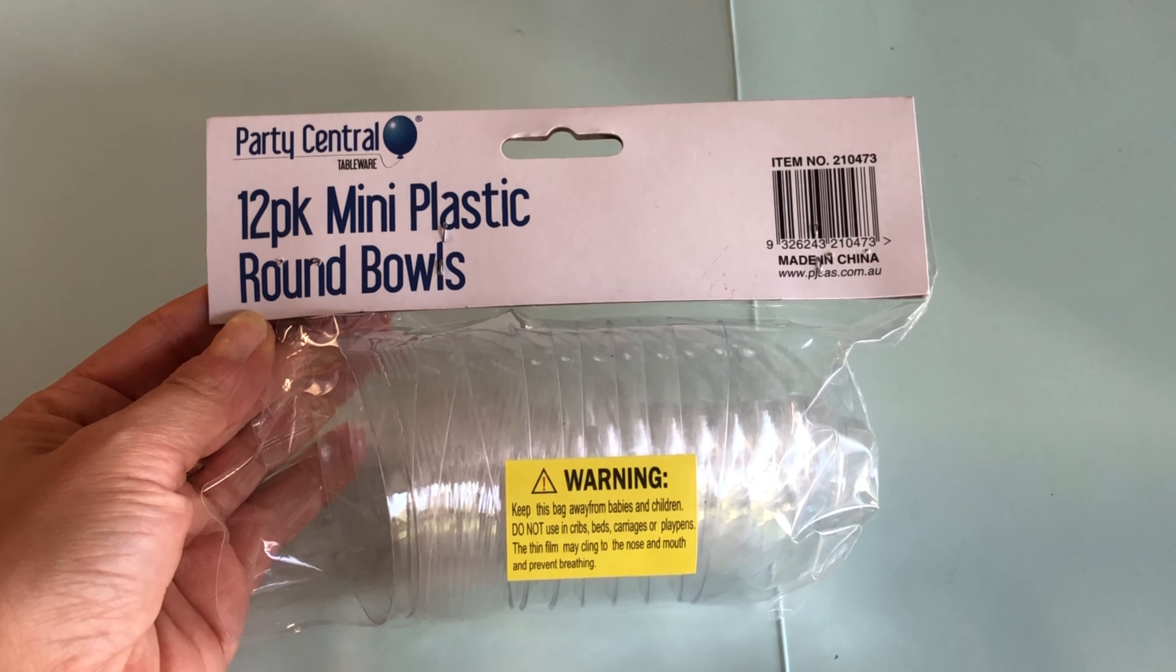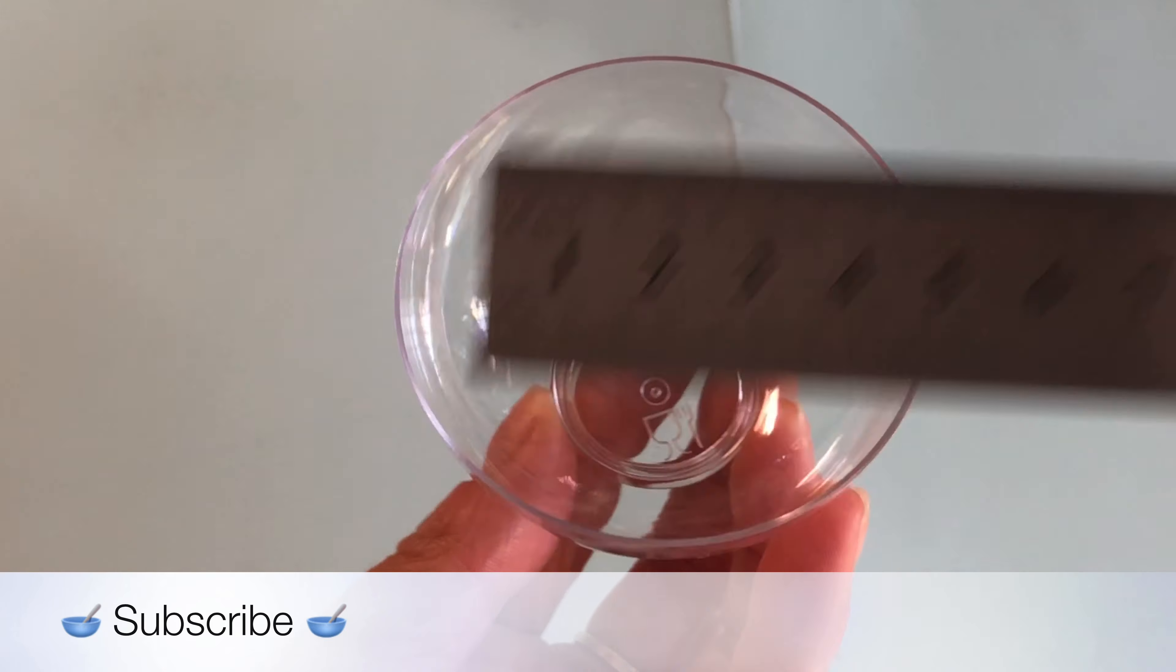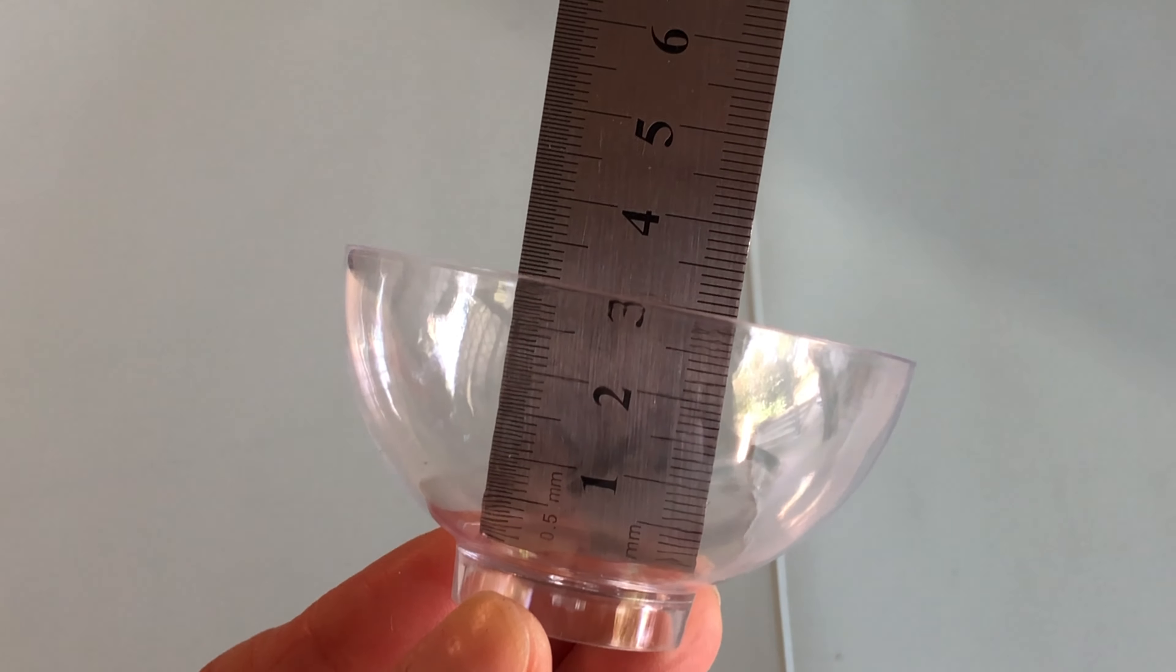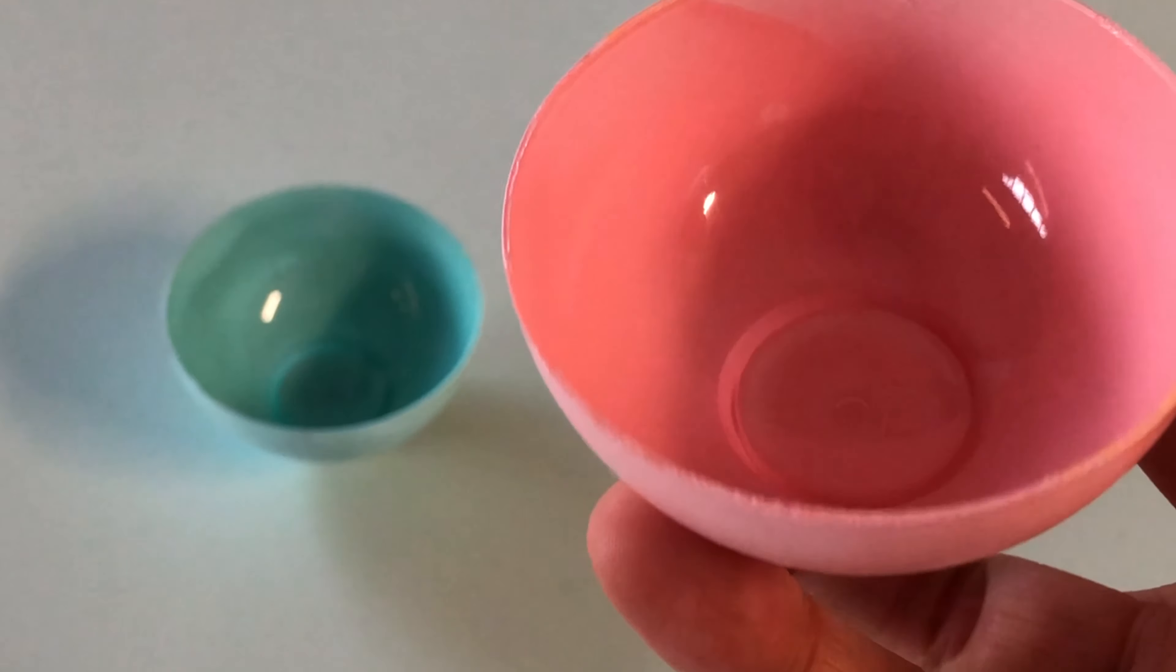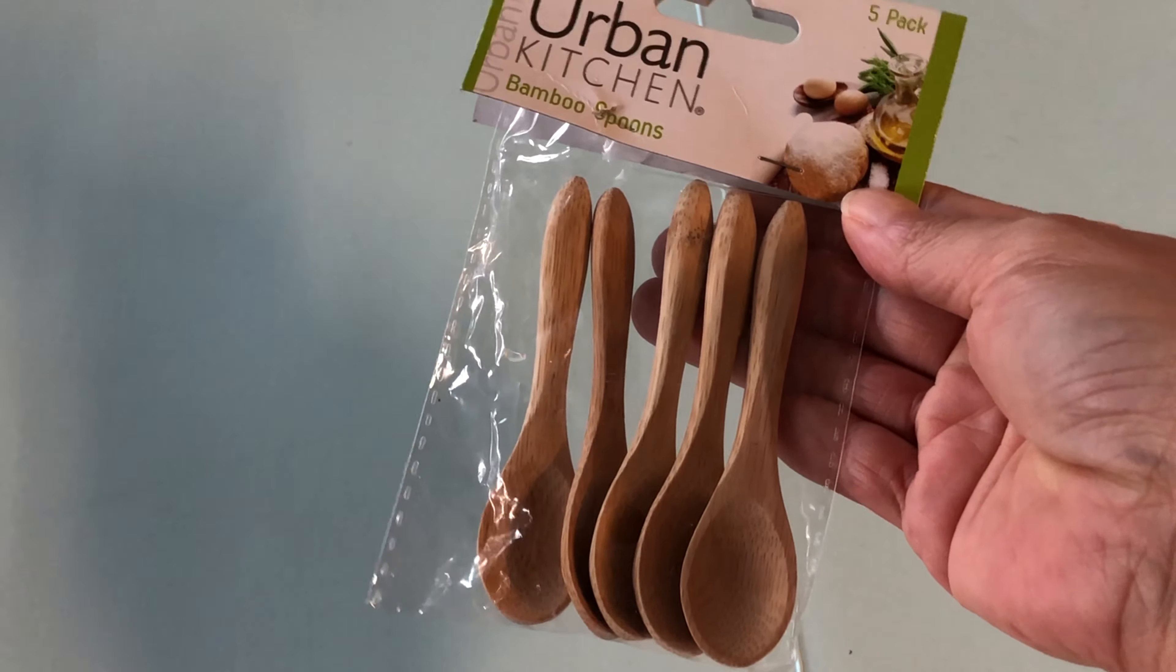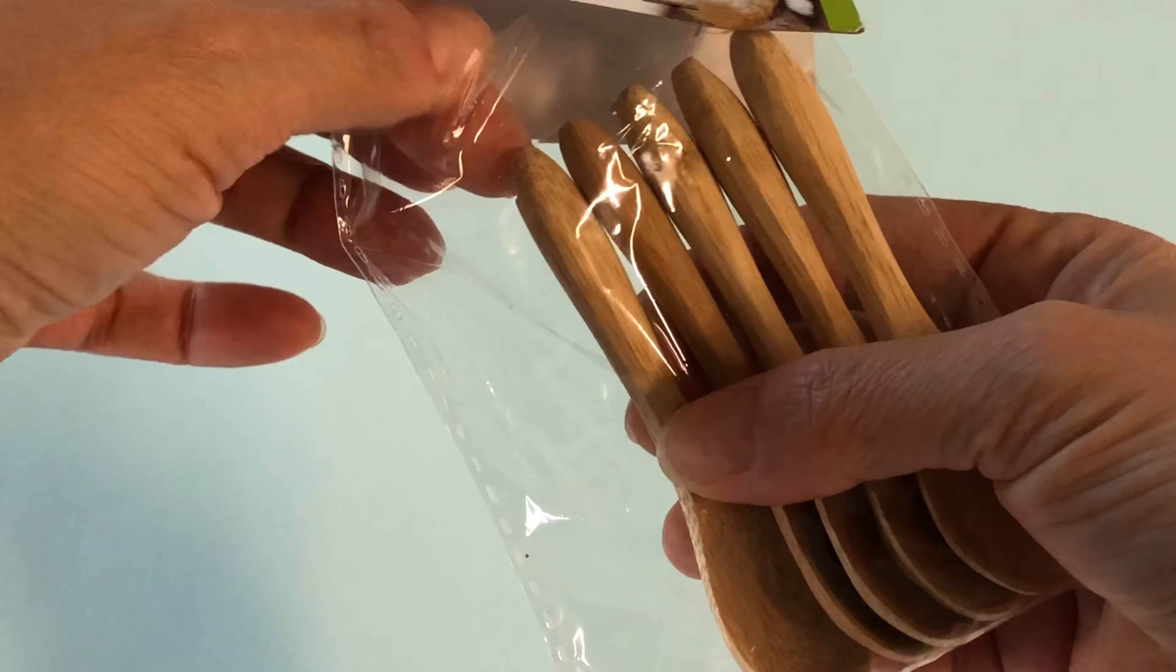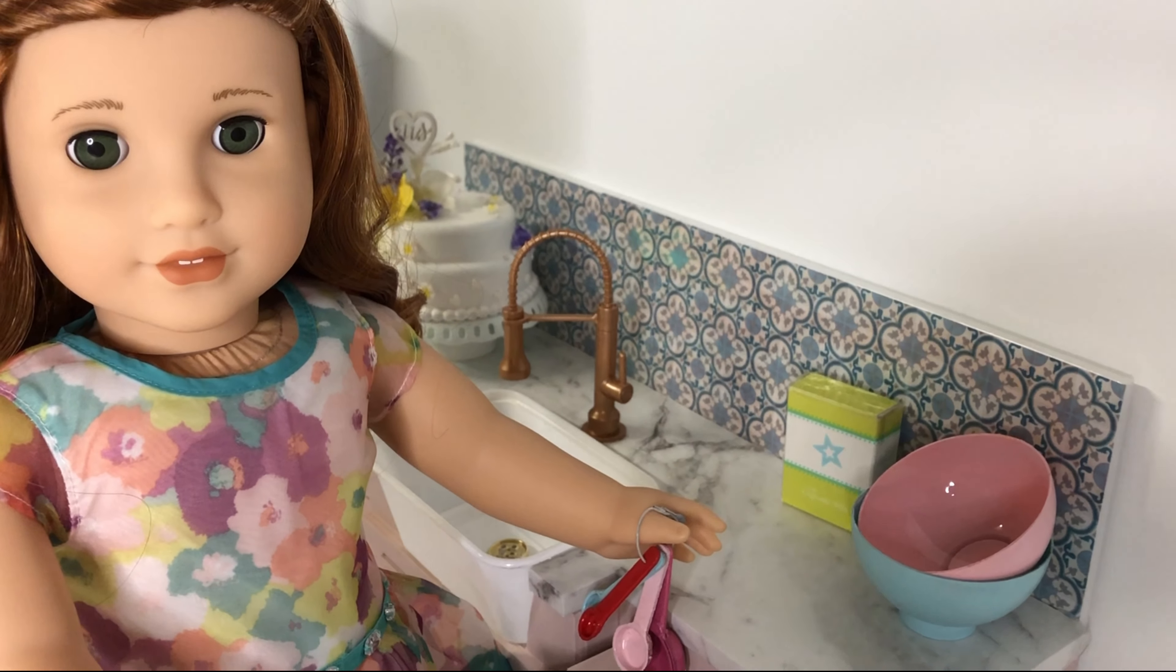For doll sized mixing bowls, we bought these mini plastic bowls at our supermarket. They have a 6.5 centimetre diameter and are 3 centimetres high. To match with our other crafts, we spray painted the bowls blue and pink. We also found these mini wooden spoons at Choice Dollars Store. They are the perfect size for our AG dolls. Now the dolls are all set to bake in the new chic country kitchen.